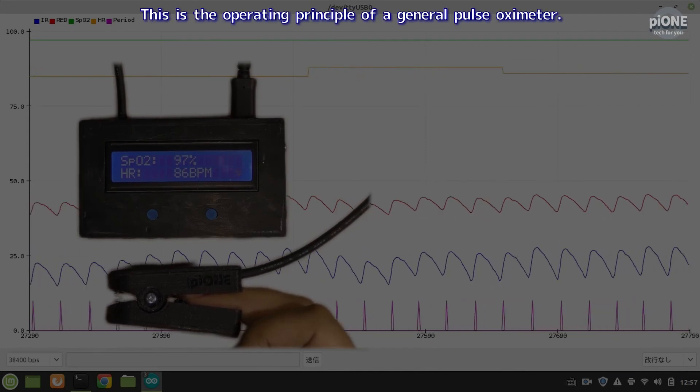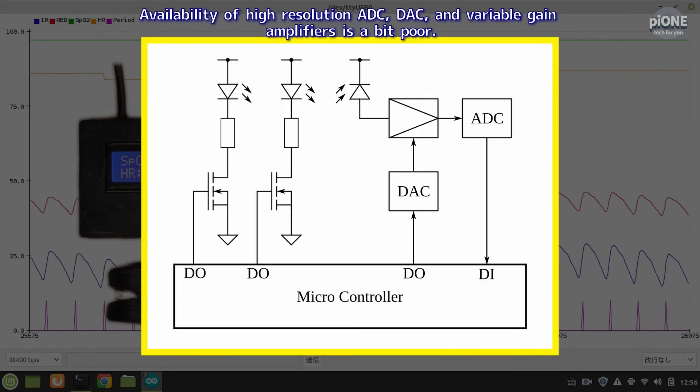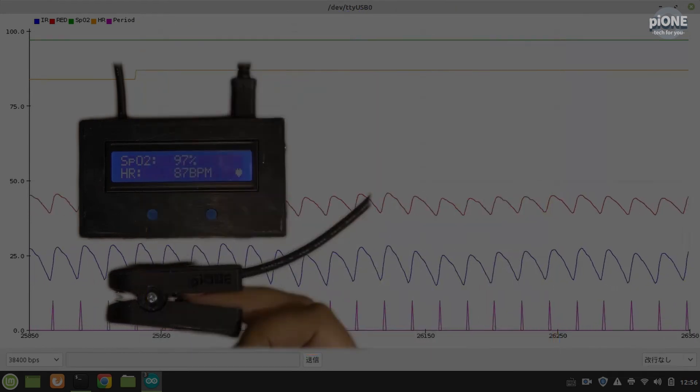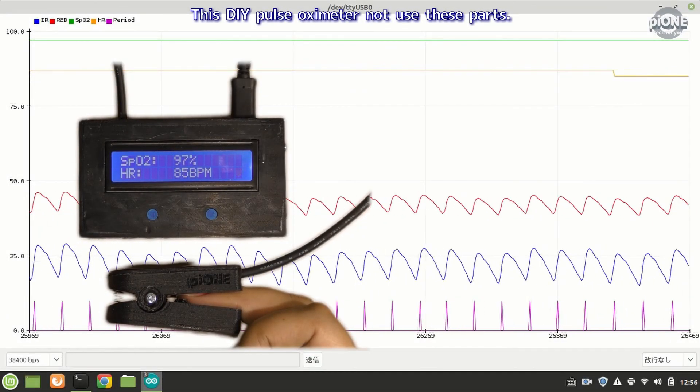This is the operating principle of the general pulse oximeter. Availability of high-resolution ADC, DAC, and variable gain amplifiers is a bit poor. This DIY pulse oximeter does not use these parts.